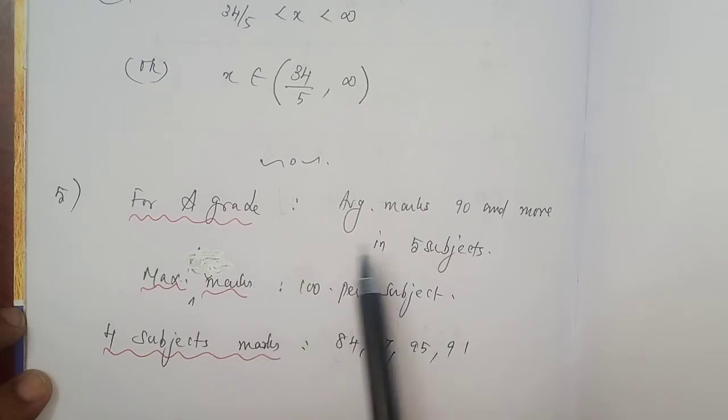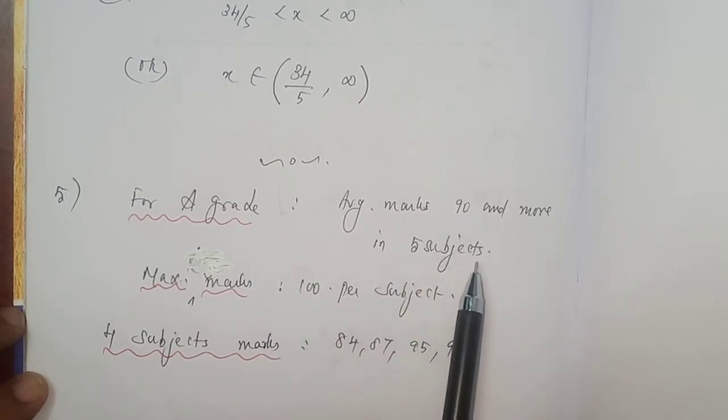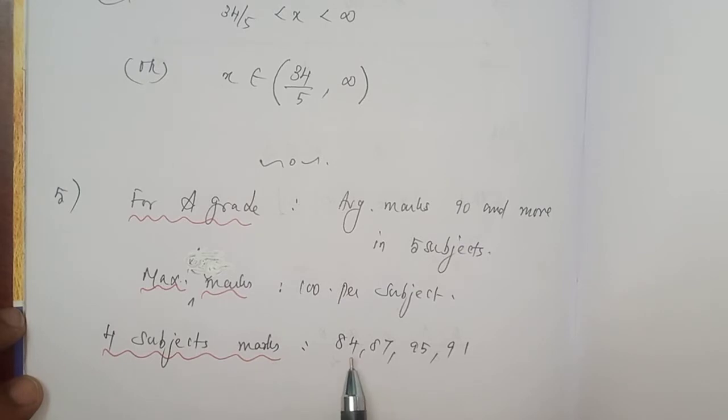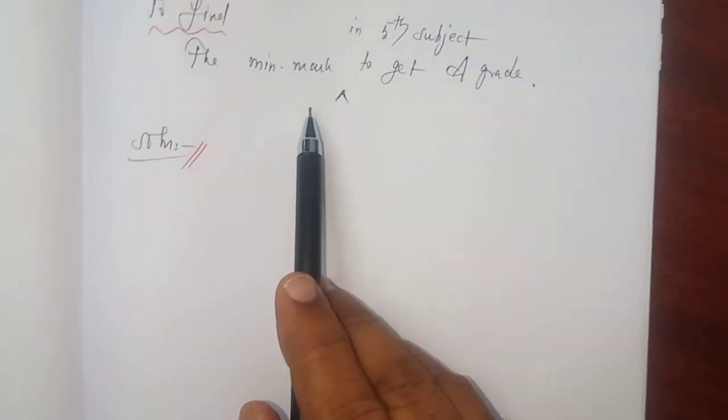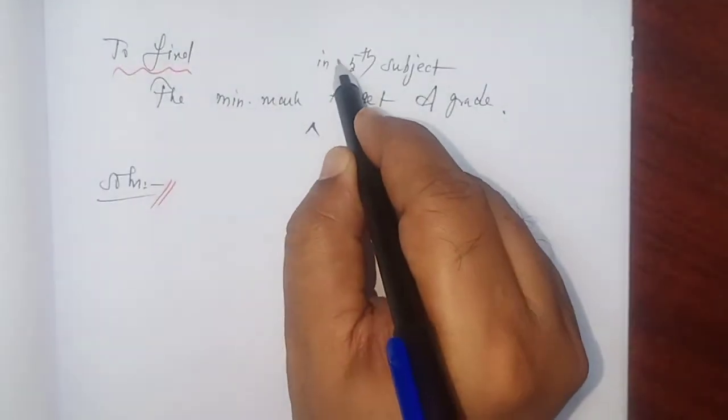So, for a grade, average marks 90 and more in 5 subjects, and maximum marks in each subject is 100. Four subject marks are given: 84, 87, 95 and 91. What we have to find? The minimum mark in the 5th subject to get a grade.